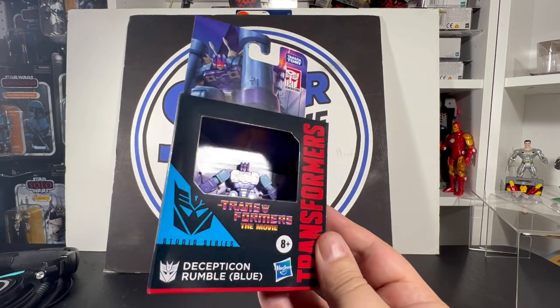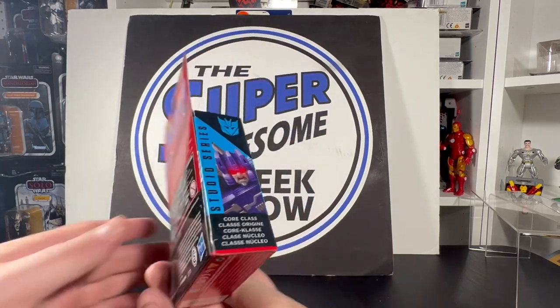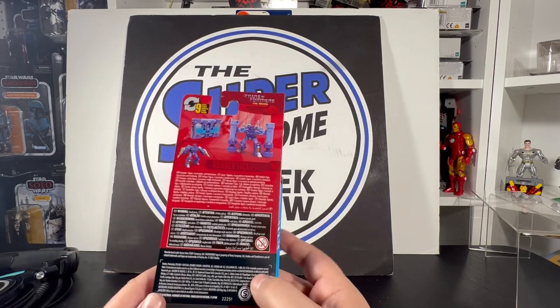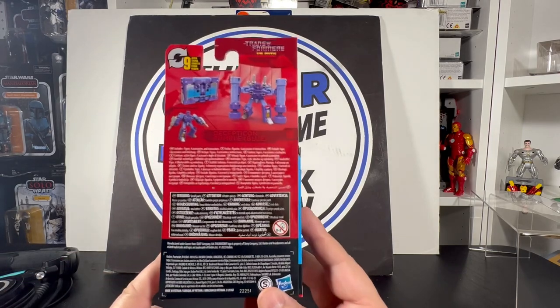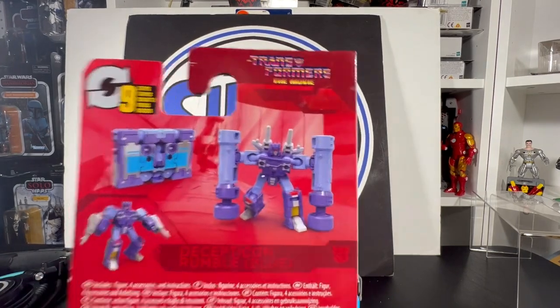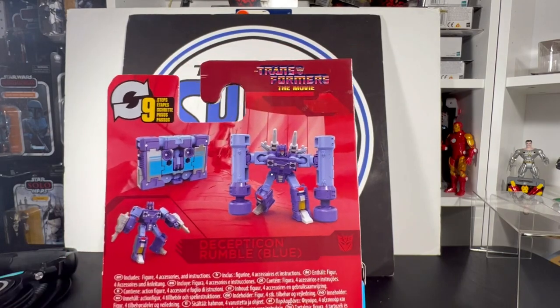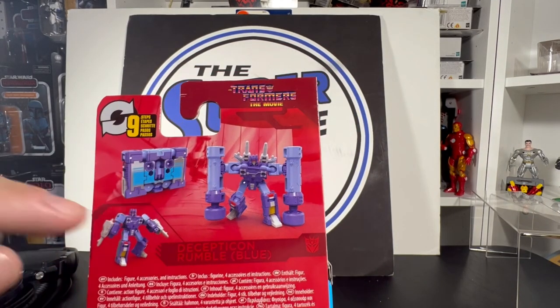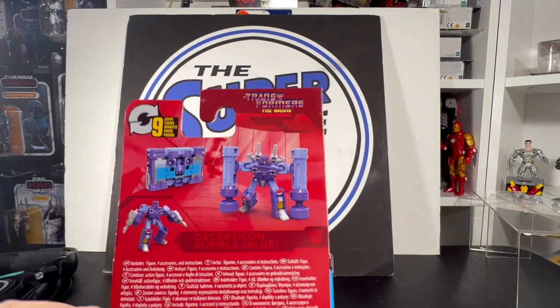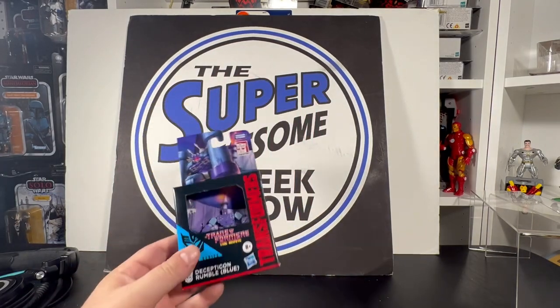Rumble blue, like Frenzy was the red one, so I don't know what they're talking about. Shows him in all of his modes, so he has a robot mode, he's got the thumper things that we saw in the cartoon, and he can turn into a cassette. So we're gonna check this all out.